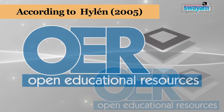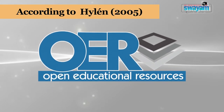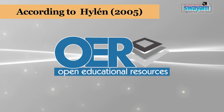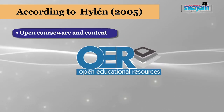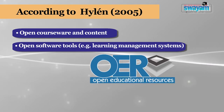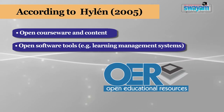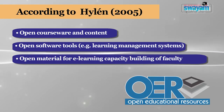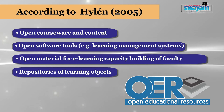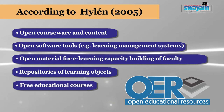Apart from Creative Commons, there are some other categories given by Helen in 2005. According to him, open educational resources may be divided into the following categories: open courseware and content; open software tools such as learning management systems; open material for e-learning and capacity building of faculty members; and repositories of learning objects and free educational courses.